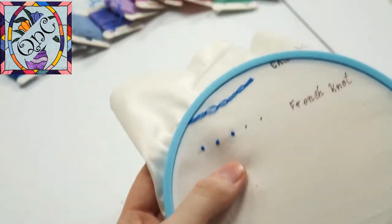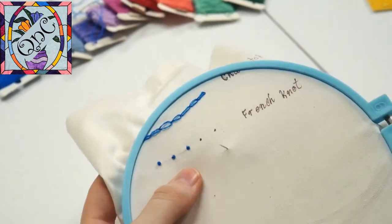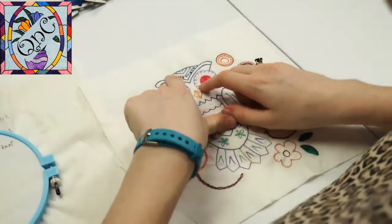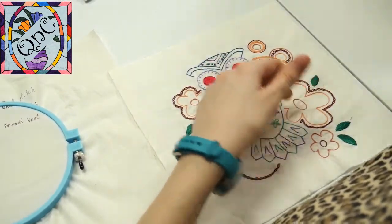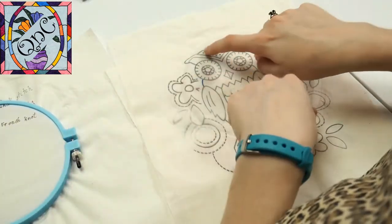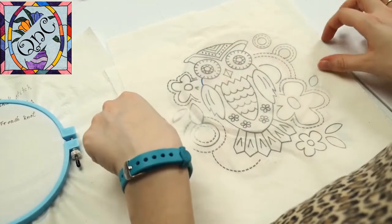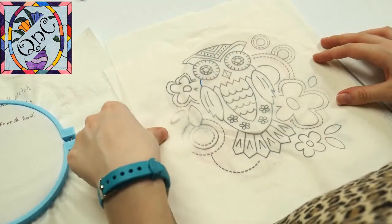And there's our French knot. So I put French knots right here on our little owl friend. So if we take a look at our pattern, it's got little dots. So that is where I just did my French knots for this pattern.